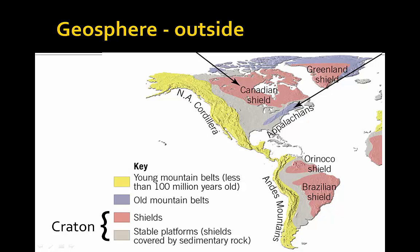Now I want you to know one more term that's not in your textbook, so flag this one: craton. Craton refers to the combined area of the shields and the platforms. The cratons in general tend to be very calm, stable areas. If you live in central Illinois, you live on a platform, which is part of a craton, which means we are not likely to have major earthquakes in this area — although I'll give you a heads up, I'm going to talk about some exceptions to that rule in a couple of chapters.